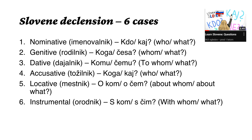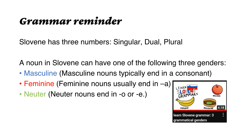So we have six cases: nominative, genitive, dative, accusative, locative, and instrumental. And of course, Slovene has three numbers: singular, dual, and plural. And a noun in Slovene can have one of the following three genders: masculine, feminine, and neuter.